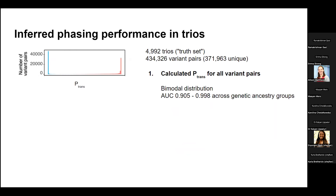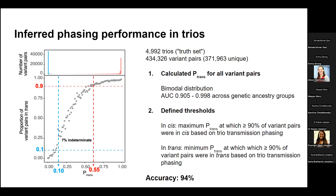To validate this method, we tested it in 5,000 trios — a truth set processed with the GnomAD dataset but not part of GnomAD — with about 400,000 variant pairs. We calculated P-trans for all these variant pairs, ending up with a bimodal distribution: many pairs fell in a high P-trans value (predicted in trans) or very low P-trans value (predicted in cis). Using an ROC curve to define thresholds, we achieved an accuracy of about 94%. We validated this across multiple allele frequencies — accuracy for variants in trans was very high across all allele frequencies, though accuracy for variants in cis drops somewhat when the allele frequencies become discordant between the two variants.